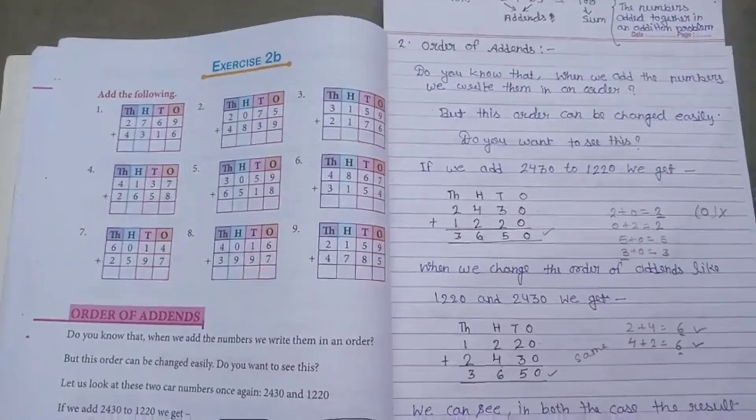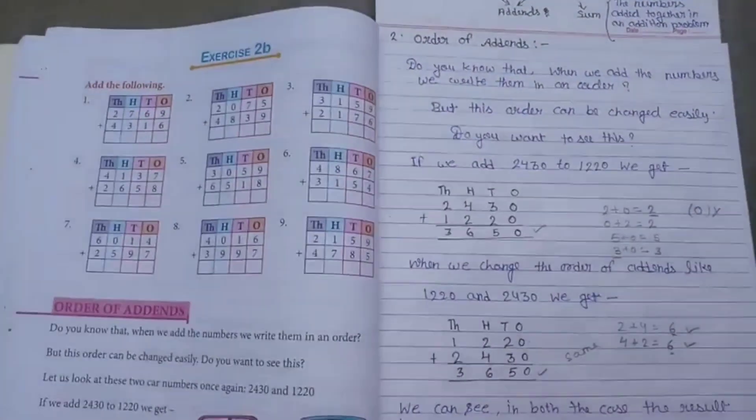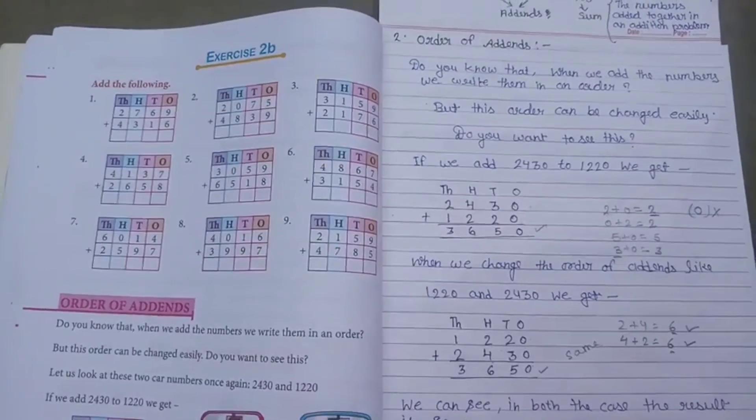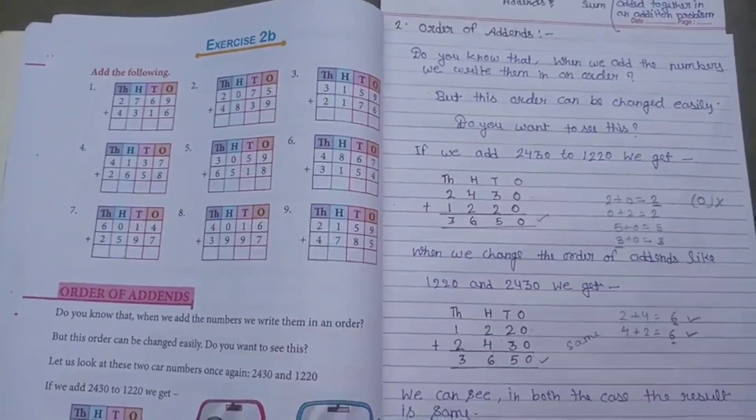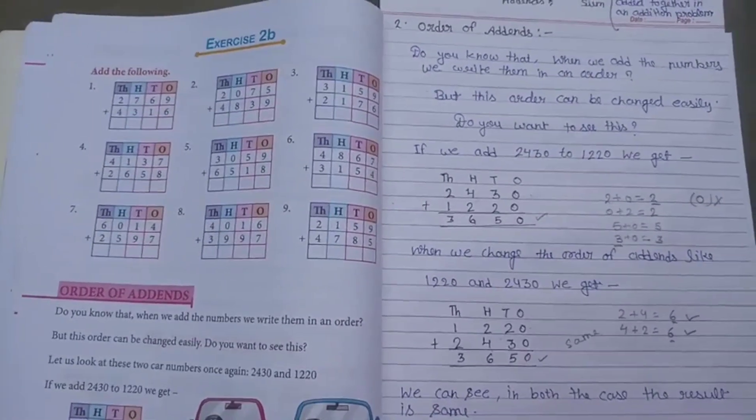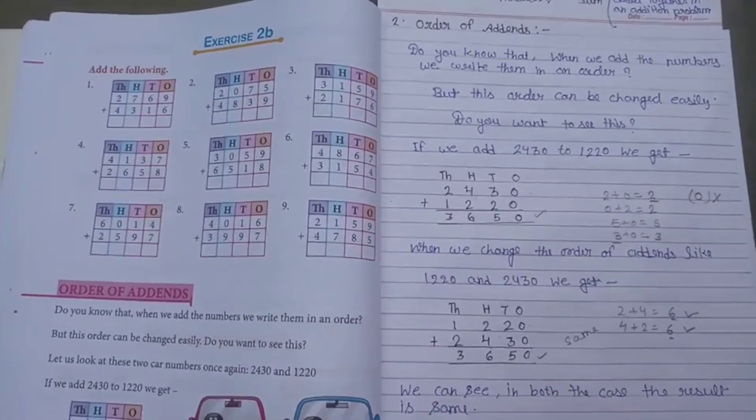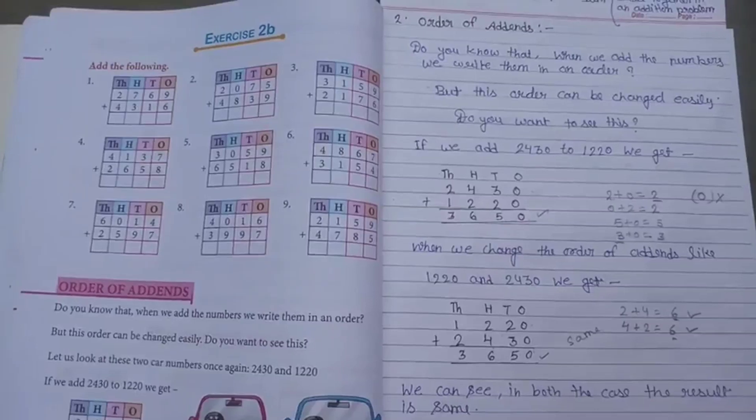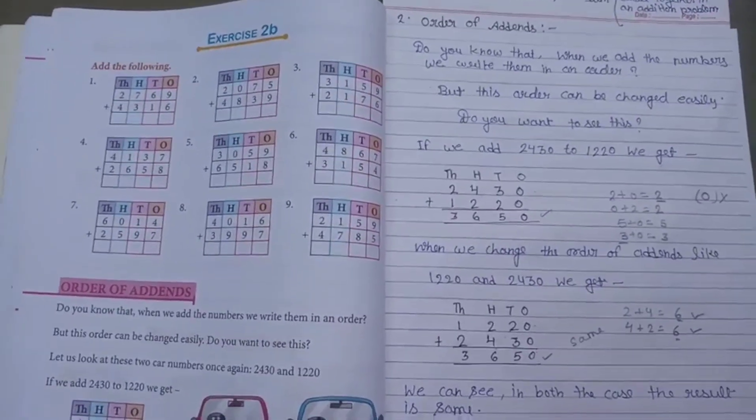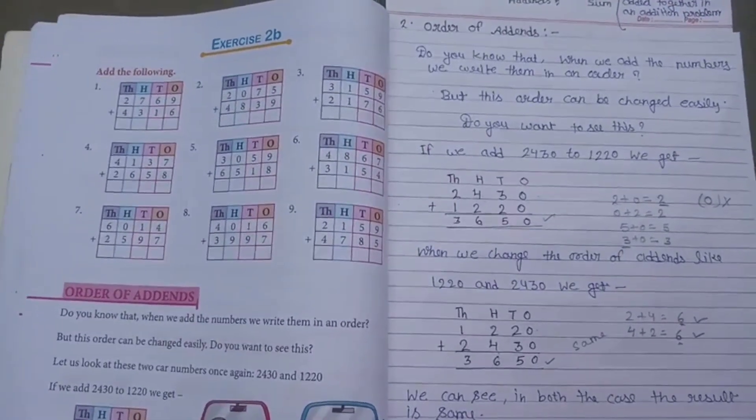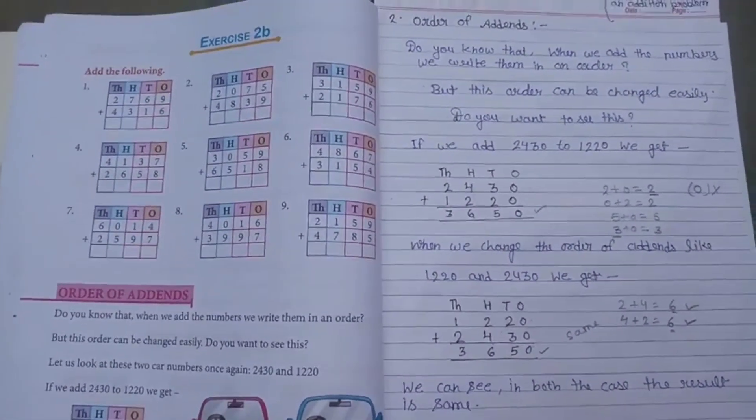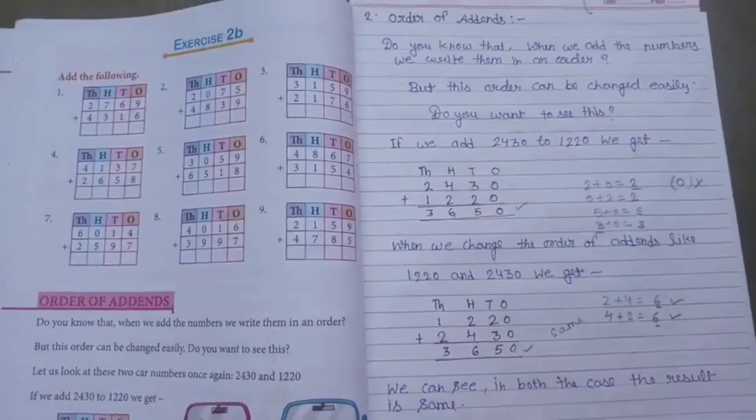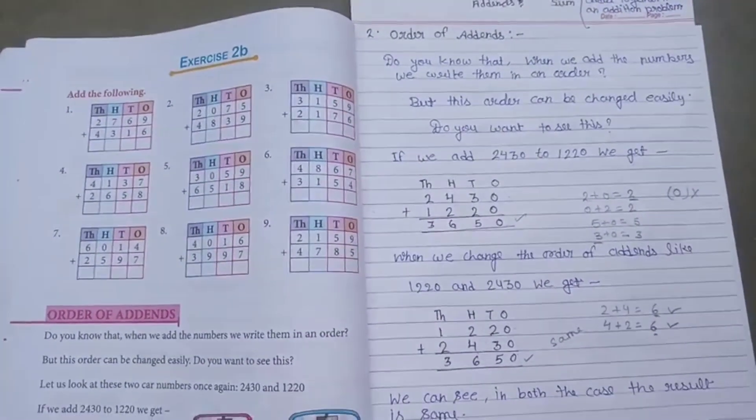We want to see this. If we add 2430 to 1220, we get ones, tens, hundreds, thousands: 0, 3, 4, 2 just below 0, 2, 2, 1.